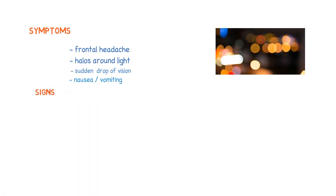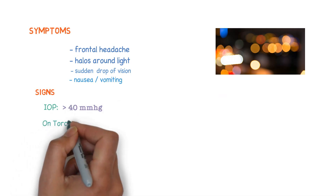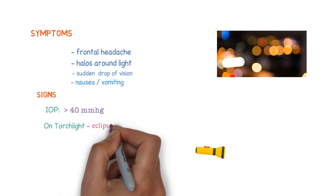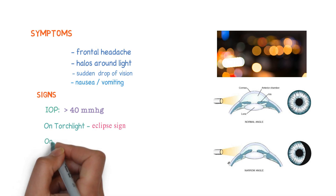Now the signs. The most important sign is intraocular pressure, which is more than 40 mmHg. On torchlight examination we can see the eclipse sign. A beam of light shown from the temporal aspect of the cornea toward the root of the nose produces a semicircular shadow on the nasal side. The width of this semicircular shadow gives an indication of the depth of the anterior chamber. This is the eclipse sign.